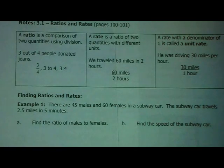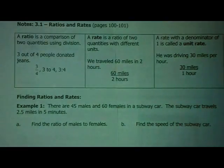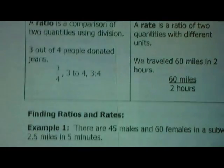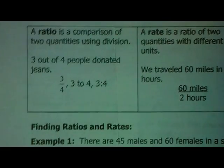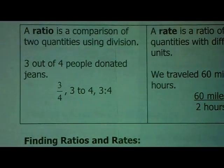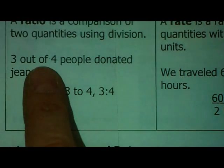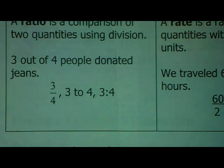So, first off, we need to know what a ratio and rate is. Another word for a ratio is a fraction. But we call it ratios because we know everyone hates fractions. A ratio is a fraction in disguise. It's a comparison of two quantities and you use division for it. So, one example says three out of four people donated jeans.